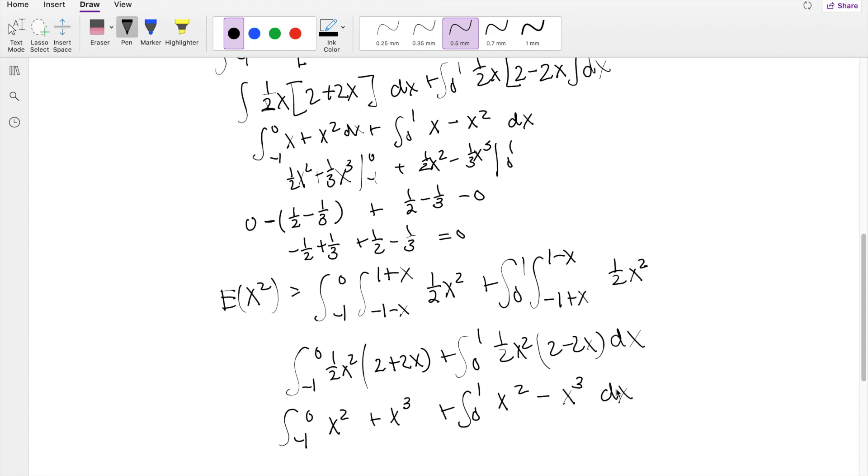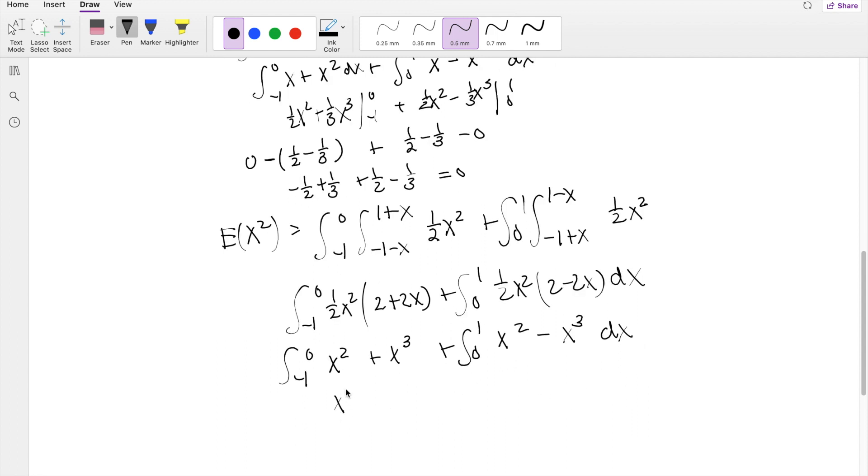Taking the anti-derivative, you get x cubed, 1 third, plus 1 fourth x fourth, plus integrating from 0 to 1, plus x cubed, 1 third, minus x fourth, 1 fourth, integrating from 0 to 1.